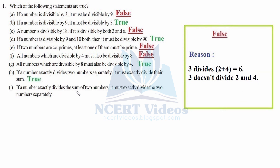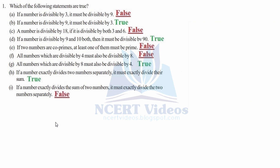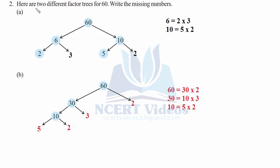Statement I: if a number exactly divides the sum of two numbers, it must exactly divide the two numbers separately. We take two and four whose sum is six, which is divisible by three, but three does not divide two or four individually, so I is false. That completes question 1.